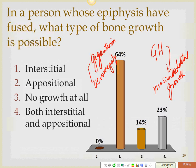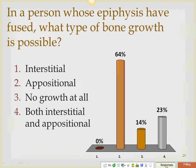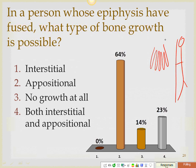In acromegaly, since the epiphyses have fused, the person cannot grow in height. However, appositional growth is possible. Their fingers become much thicker because the bones increase in thickness; the jaw becomes really thick with a very prominent, protruding jaw line. Other bones also get very thick, and because the growth hormone does other things, they have other problems as well.